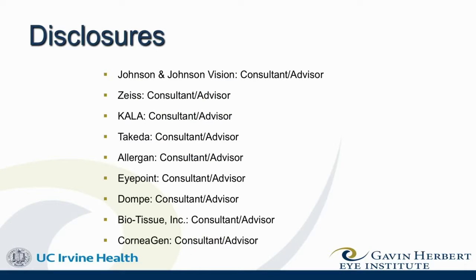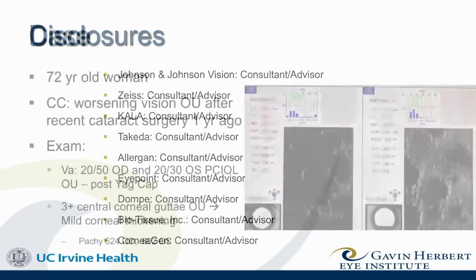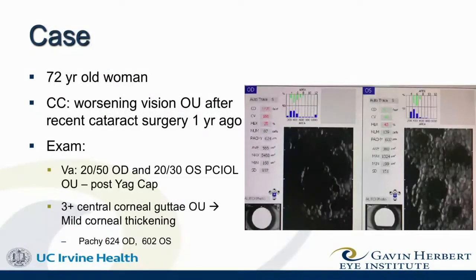These are my financial disclosures. I'm going to start with a case: a 72-year-old woman who presents with worsening vision a year after uncomplicated cataract surgery. She has gutae in both corneas, some mild corneal thickening, and a central cluster of gutae.